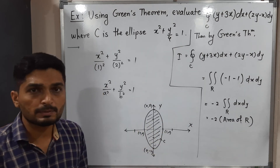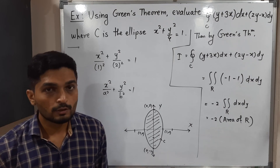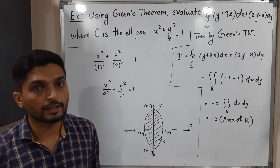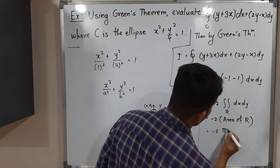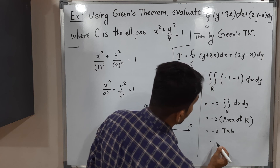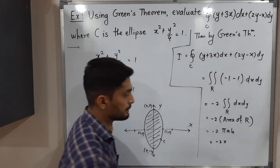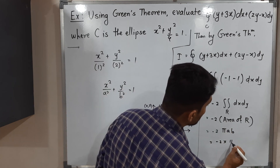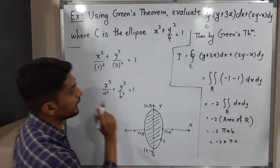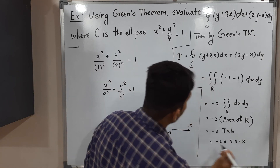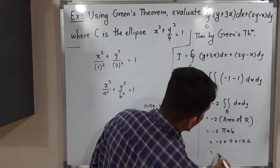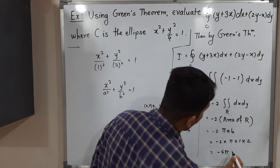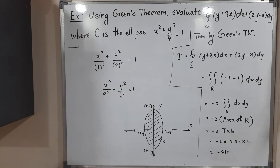We want the area of the ellipse. The standard formula for the area of an ellipse is πab. With a = 1 and b = 2, the area is π × 1 × 2 = 2π. Therefore I = −2 × 2π = −4π. So the required answer is −4π.